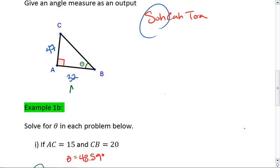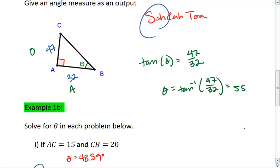In this situation, we're working with the adjacent and the opposite sides, meaning we're using tangent. So, tan of theta equals opposite over adjacent. That's 47 over 32. Since we're solving for the angle measure, we're going to use inverse. So, theta equals tan inverse of 47 over 32. Use your calculators, and we should find that that value is about 55.75 degrees.